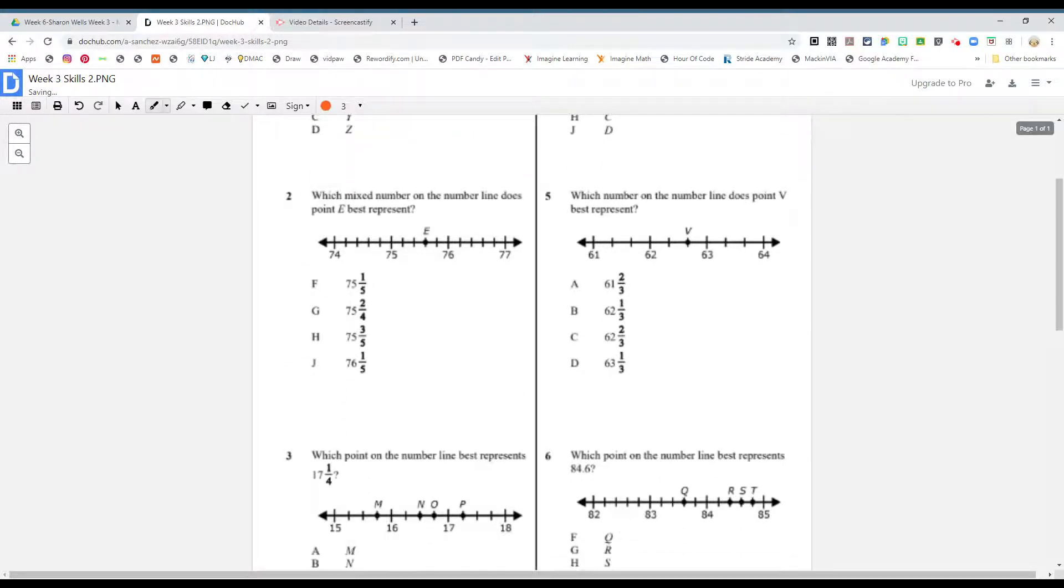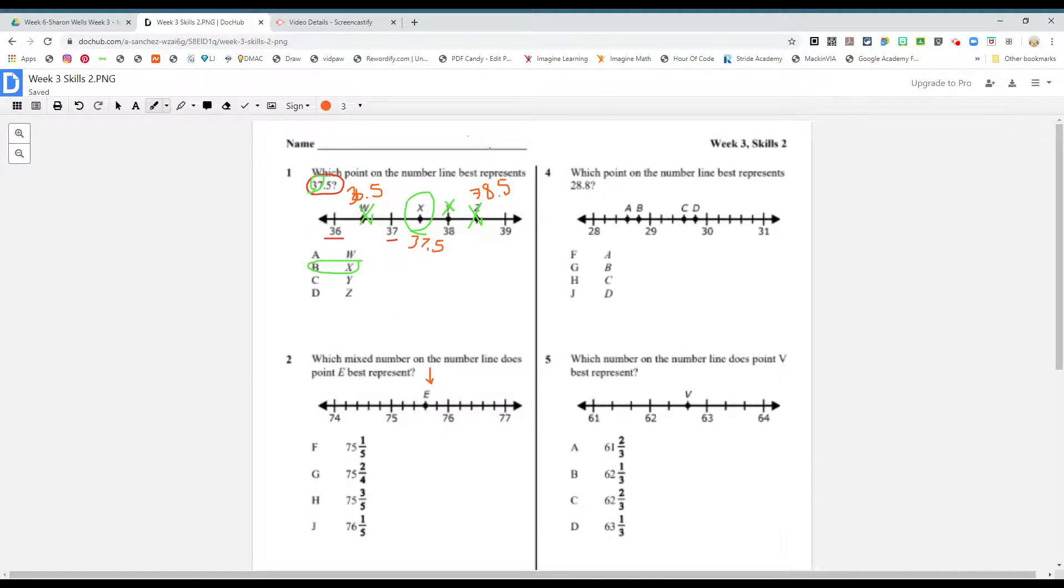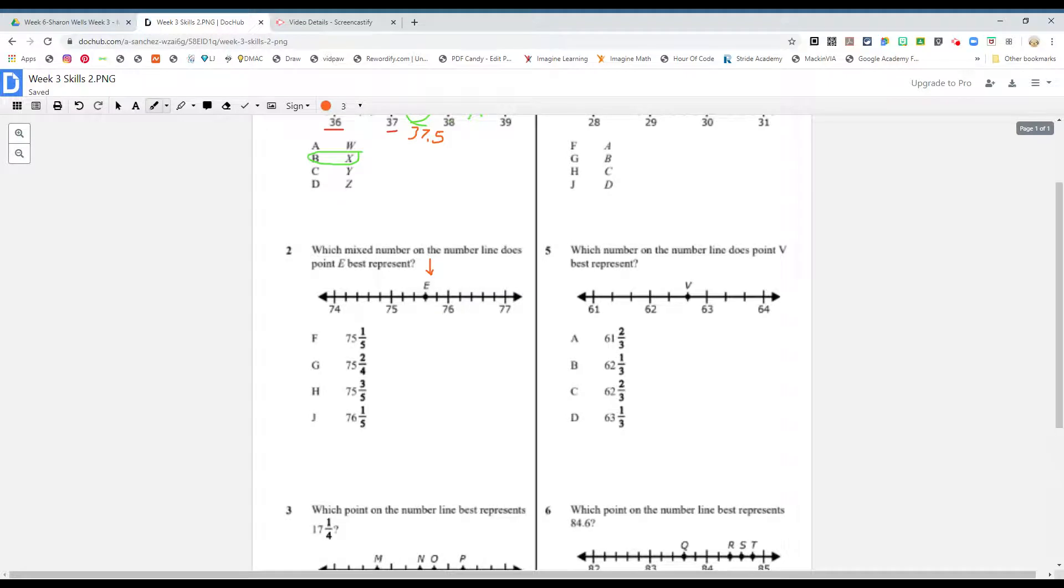Alright, alright, let's do another one. Number two. It's asking for which mixed number on the number line does point E represent. So that's what we're looking for boys and girls. And we're not talking about decimal points, we're talking about fractions. Okay, so I'm going to change that into a chocolate bar.